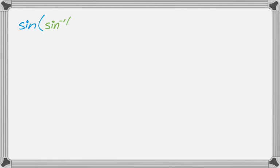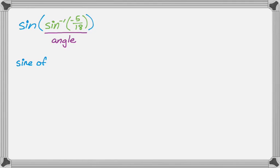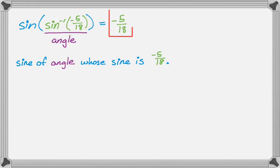The first question we'll look at is the sine of the inverse sine of negative 5 over 18. The easiest way to deal with this is to think about what the problem is saying: find the sine of an angle whose sine is negative 5 over 18. So the answer is just negative 5 over 18. You can deal with all compositions that have the normal trig function on the outside and the inverse trig function on the inside in a similar fashion.